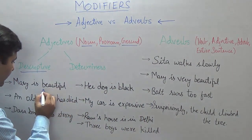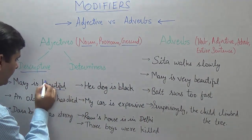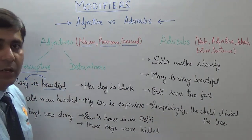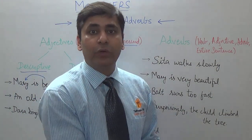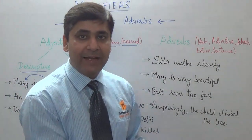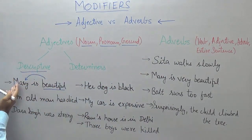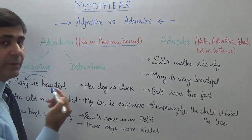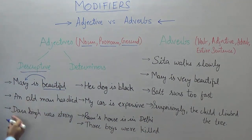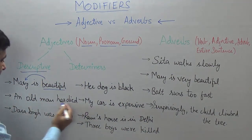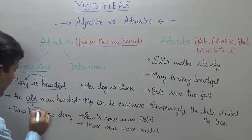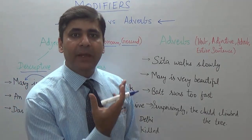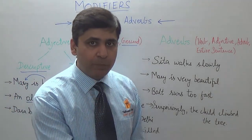For example, 'Mary is beautiful.' Here 'beautiful' is an adjective because it is giving you additional information about Mary — it is describing her beauty, so it becomes a modifier for Mary. Since Mary is a noun, 'beautiful' becomes an adjective. Similarly, 'an old man has died' — here 'old' is describing the man; it is telling the man's age.